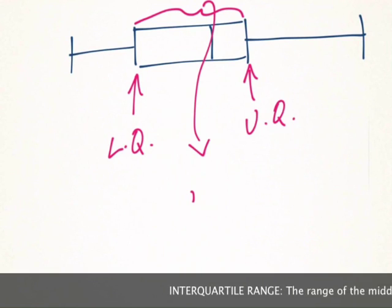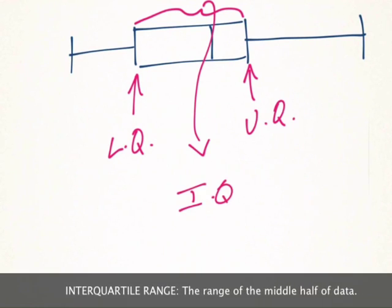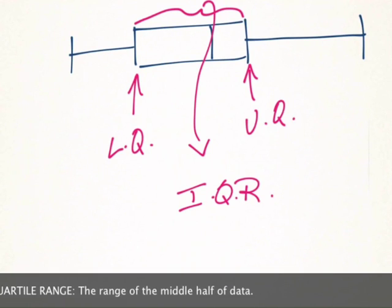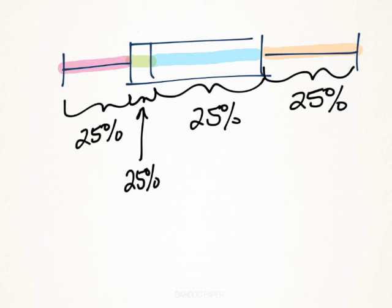Now each of these sections, this section here, this section here, and this section, and this section represents 25% of the data. So this section here, this whisker represents 25%. This small portion of the box, although it's small, still represents 25% of the data. This one represents 25%, and this larger whisker here represents 25% of the data.